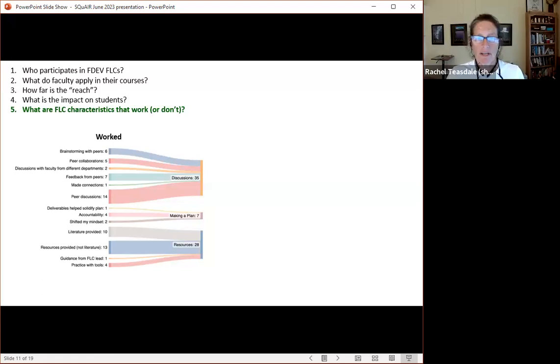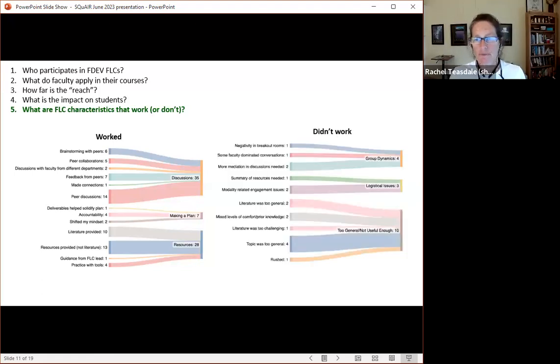Some specific characteristics that worked or didn't work are shown here. They liked discussing things together, brainstorming with peers, peer collaborations. They liked having deliverables and making a plan. They thought that that was effective. And they appreciated the resources that were provided.